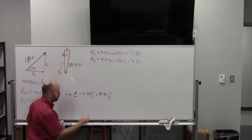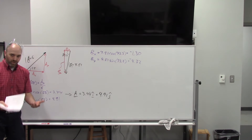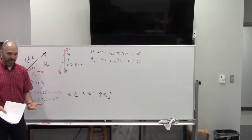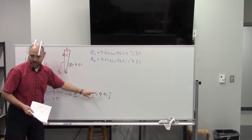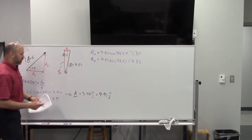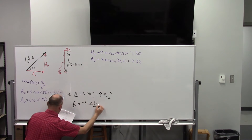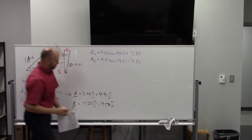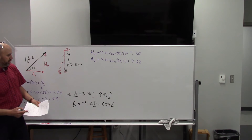You write your X piece in front of î, your Y piece in front of ĵ — that's how you write it in vector form. Vector means amount and direction, and this format gives you all that information: how far over and how far up. Vector B would be negative 1.30 î minus 4.32 ĵ.